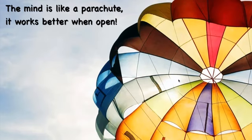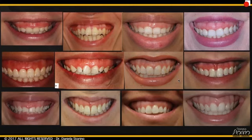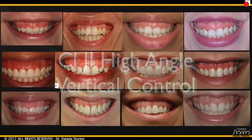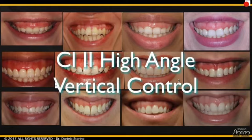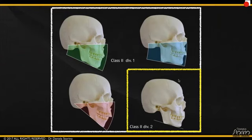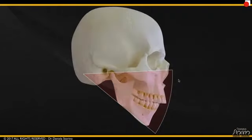I'm going to ask you to keep an open mind — like a parachute, it works better when it's open. Today we're going to focus on class two high angle and vertical control: adults with class two, very high angle, and how we can control the vertical during growth for adolescents. When we talk about class twos, there are four different types: class two div one — brachyfacial, mesofacial, and dolichofacial, which is what we call hyperdivergent or high angle. The most difficult ones are class two div two because of the muscles.